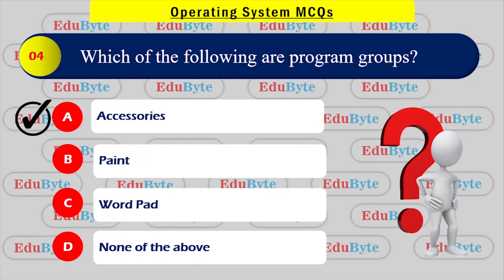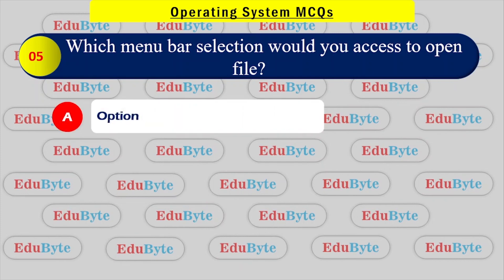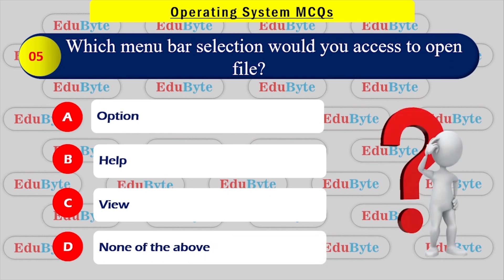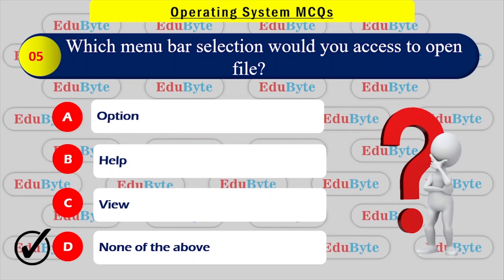Which menu bar selection would you access to open a file? To open a file, you go to the menu bar. The options are: Option A - File, Option B - Help, Option C - View, Option D - None of the above. The correct answer is File — you use File to open a document.